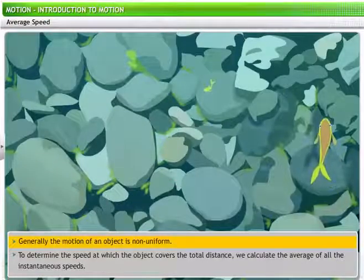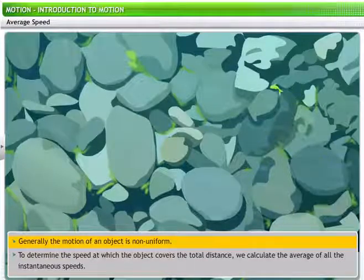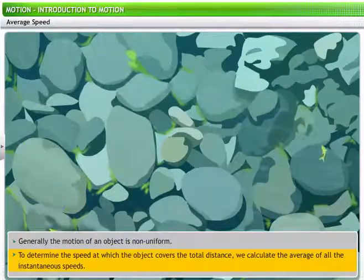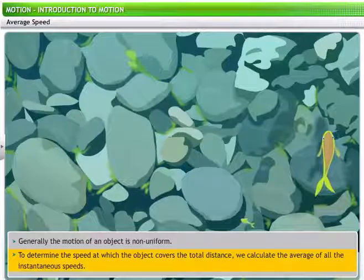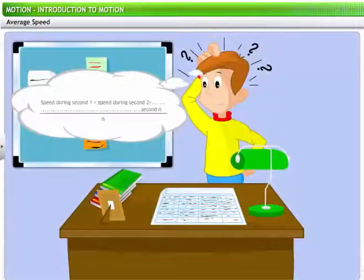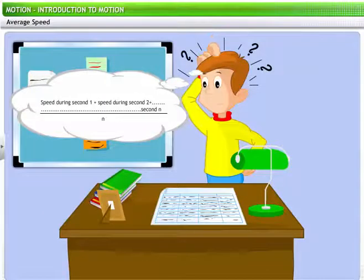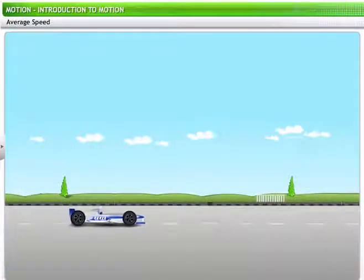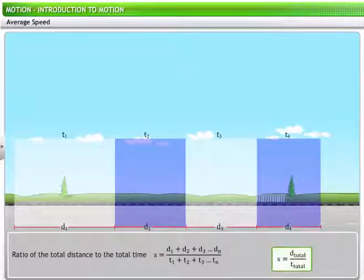However, generally, the motion of an object is not uniform from its starting point to its final destination. Its speed varies at different points or stretches in the journey. In such cases, to determine the speed at which the object covers the total distance, you may need to gather data on the speed of the object at each instant when it is in motion, and then calculate the average of all these instantaneous speeds. However, gathering so much data can be tedious, and certainly impossible in the case of large distances. Therefore, we typically use a quantity called average speed in our calculations.